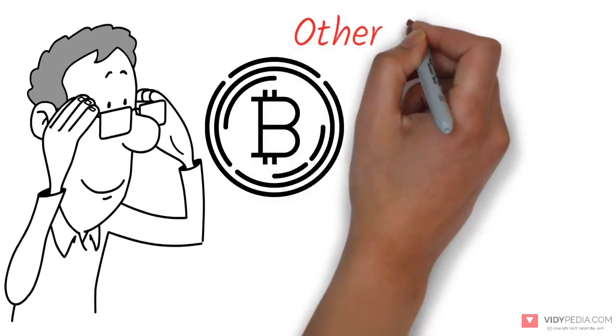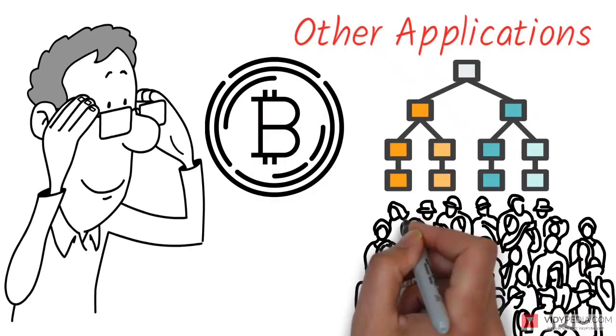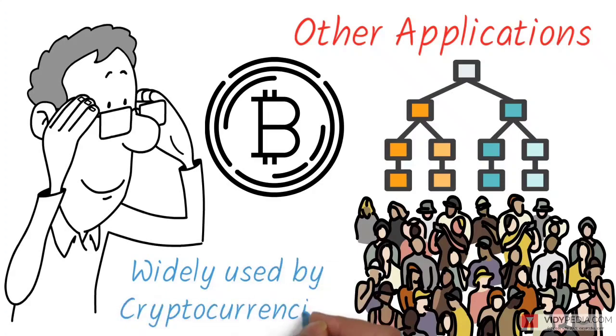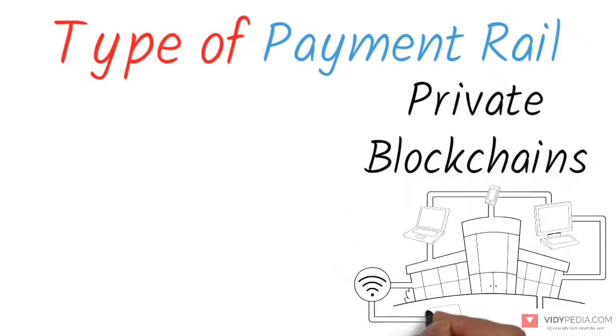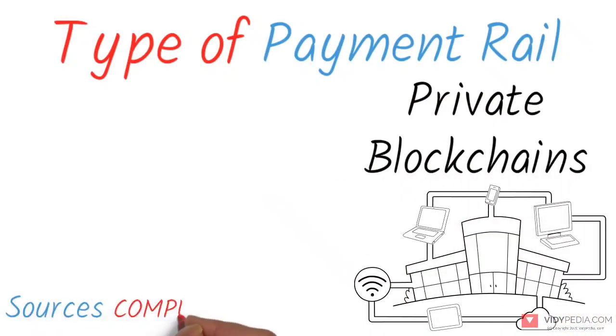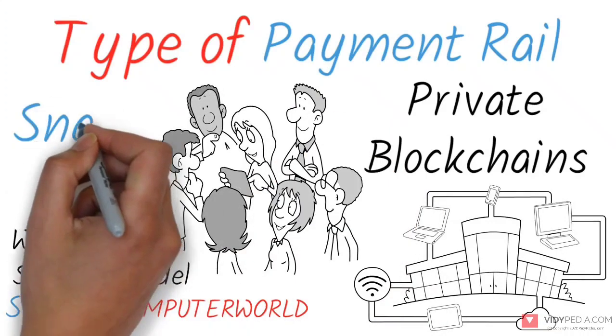The Bitcoin design has inspired other applications and blockchains that are readable by the public are widely used by cryptocurrencies. Blockchain is considered a type of payment rail. Private blockchains have been proposed for business use. Sources such as Computer World called the marketing of such blockchains without a proper security model snake oil.